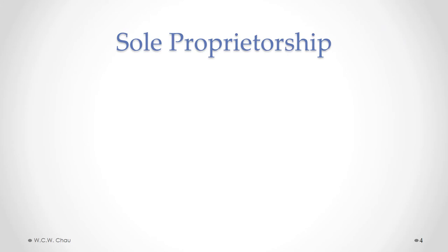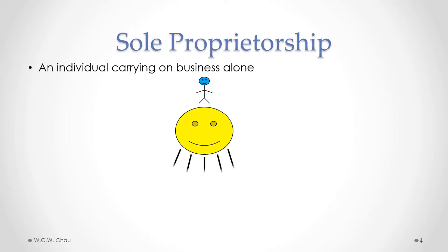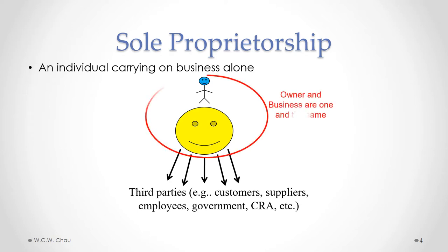Let's now do a high-level overview of those three basic types of business organizations. The simple legal definition of a sole proprietorship is one individual carrying on business alone — one owner carrying on business. The business has various dealings with outside third parties, such as customers, suppliers, employees, various levels of government, including the Canada Revenue Agency. The key legal aspect of a sole proprietorship is that the owner and the business are legally considered to be one and the same.